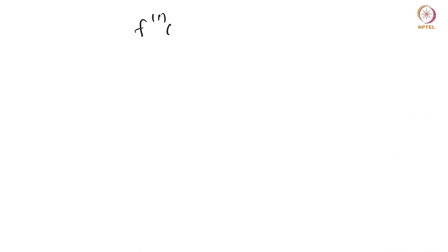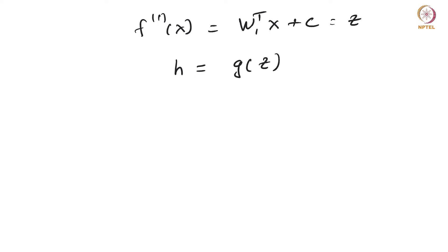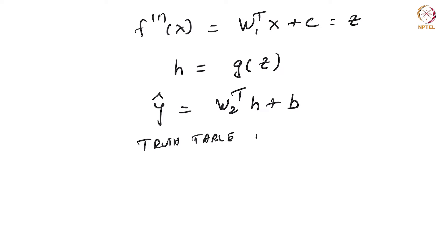We have F1 of X is W1 transpose X plus C — this is your Z. Then your H is G of Z, and then your output Y-hat is W2 transpose H plus some bias B. This is the general form that we will be using for the truth table for the XOR function.